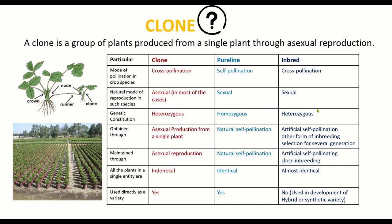Inbred lines also have some heterozygosity due to slight cross-pollination between two or three inbreds. The process of obtaining a clone is by asexual reproduction from a single plant, while pure lines are obtained by natural self-pollination and inbred lines by forced artificial self-pollination. In cross-pollinated crop plants, this artificial selfing may lead to inbreeding depression. Maintenance of clones is done by asexual methods such as cuttings or grafting.